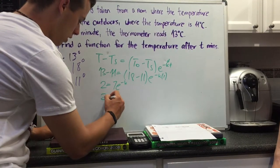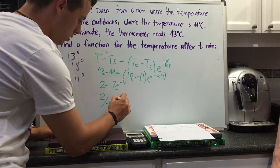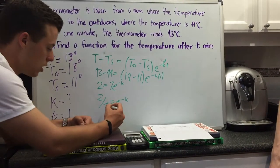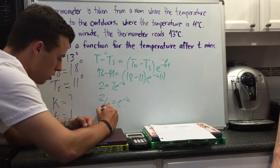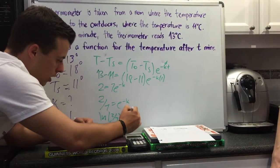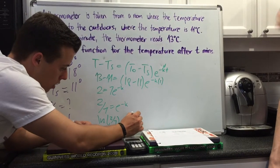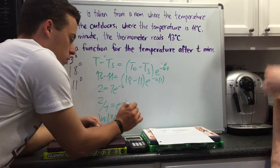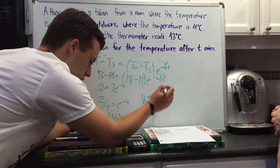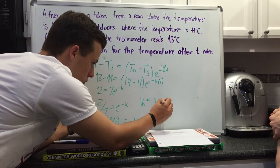Divide both sides by 7, get 2 over 7 equals e to the negative K. If we take the ln of both sides, we know this from previous units, take the ln of both sides to get rid of the e. So ln of 2 over 7 equals negative K, and punch that into our calculator, K is equal to 1.25.